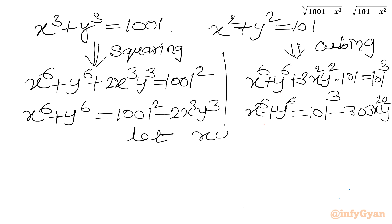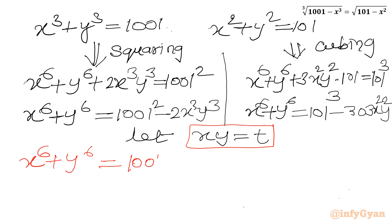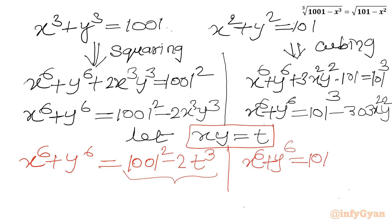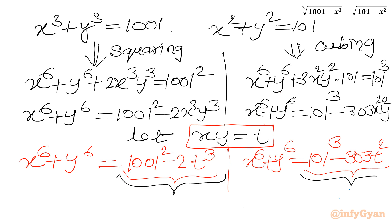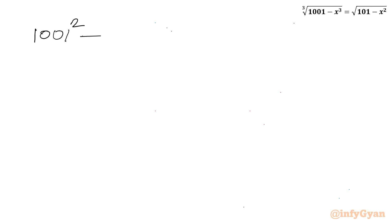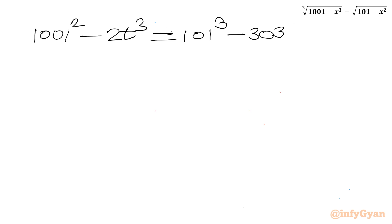Now let us assume xy equals t. Substituting into both equations: x power 6 plus y power 6 equals 1001 squared minus 2t cube, and x power 6 plus y power 6 equals 101 cubed minus 303 t square. Since the left-hand side is x power 6 plus y power 6 in both equations, I can equate the right-hand sides: 1001 squared minus 2t cube equals 101 cubed minus 303 t square.